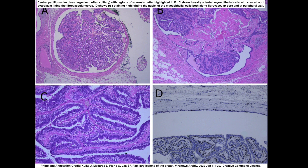Here is a histologic image of a central papilloma. It involves the large duct and has regions of sclerosis, better highlighted in panel B. Panel C, looking closer, shows basally-oriented myoepithelial cells — cells with clearer cytoplasm — lining the fibrovascular cores. Panel D shows P63 highlighting the nuclei of the myoepithelial cells. As you can see, it's intact, as well as the peripheral wall where the myoepithelial cells are highlighted.